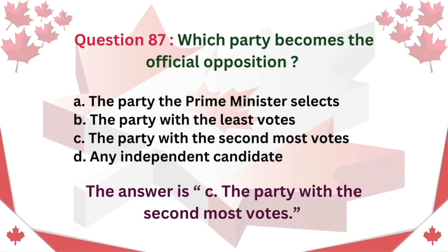Question 87: Which party becomes the official opposition? A. The party the Prime Minister selects. B. The party with the least votes. C. The party with the second most votes. D. Any independent candidate. The answer is C: The party with the second most votes.